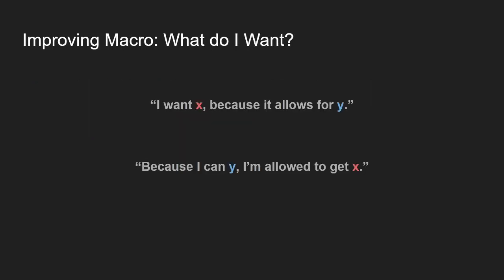Improving macro: going back to what do I want. The original statement is 'I want X because it allows for Y,' but you can flip it on its head — because I have this tool, I'm allowed to do other things. Because I have a projectile, I'm allowed to zone you. Because I have a charged projectile, I'm allowed to stay in the corner and charge up, and you're forced to try and stop me if you respect it too much. And you can flip that again — because I'm capable of moving away from the charge shot and I don't respect it, I can let you charge for free and take stage control. It's about thinking what you want and the tools you have to get what you want.